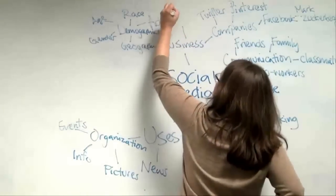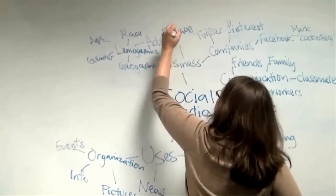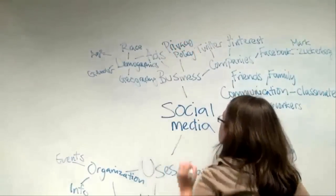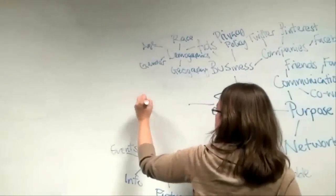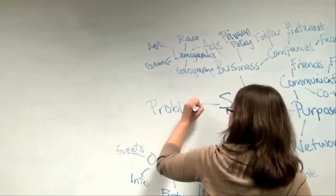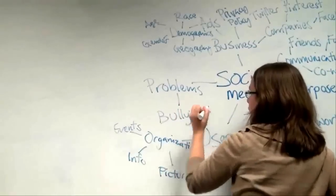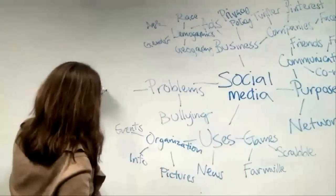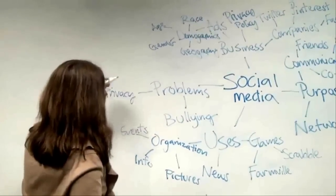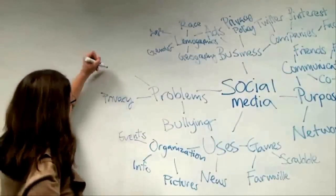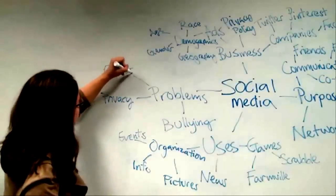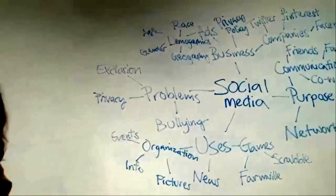Another topic related to business is its privacy policy. Speaking of privacy, another topic related to social media is problems. One well-known problem is bullying. Another problem is privacy and how customer information is shared. Another problem might be exclusion of people who don't use social media.